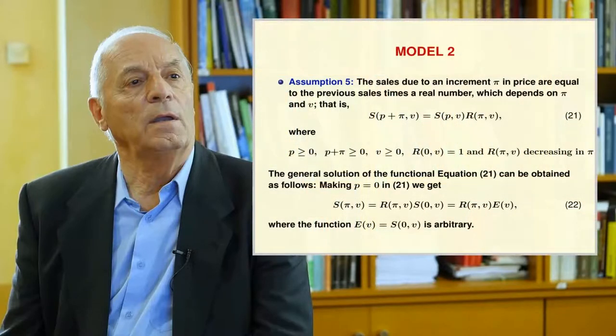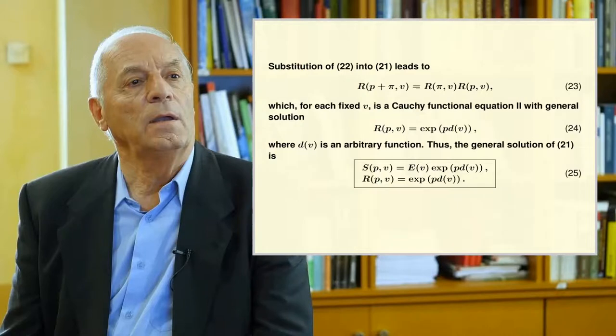Model 2 uses Assumption 5: the sales due to an increment Pi in price are equal to the previous sales times a real number which depends on Pi and V, that is, functional equation 21 holds. Making P equal to 0 in 21 gives expression 22, where the capital E function is arbitrary. Substitution of 22 into 21 leads to functional equation 23, which for each fixed V is a Cauchy functional equation 2 with general solution 24 containing arbitrary function D. Thus the general solution of 21 is given in expression 25.